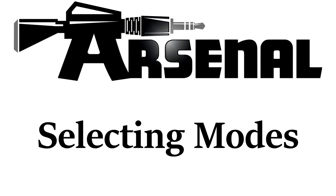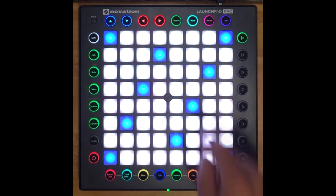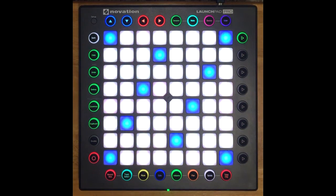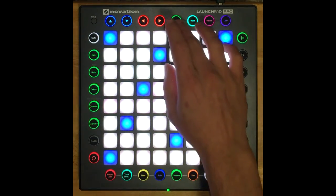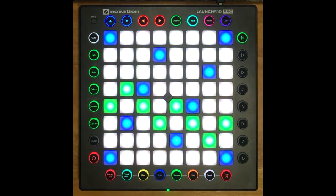Buttons that are used for selecting modes have dual functionality. If you press them quickly, you'll latch into a mode. And if you hold them down, you'll have momentary access to a mode. To give you an example of how this is useful, right now I'm in Note Mode. Let's say I need to launch a clip. I can hold down the Session button, launch the clip that I want, release the Session button, and I'll be back in Note Mode. So this dual functionality allows for a smoother workflow.